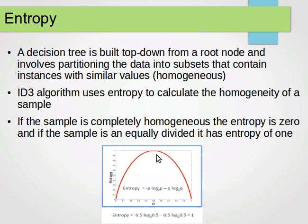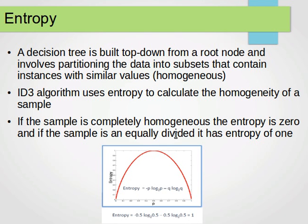If you look at this diagram, we have probability from 0.1 up to 1 on one axis and entropy values from 0.1 up to 1 on the other. At the point 0.5, we can compute entropy as minus P log P minus Q log Q. If P and Q are both 0.5 — things are equally divided — then entropy equals minus 0.5 log base two of 0.5, minus 0.5 log base two of 0.5, which equals one. If everything is homogeneous, entropy will be zero at either extreme.